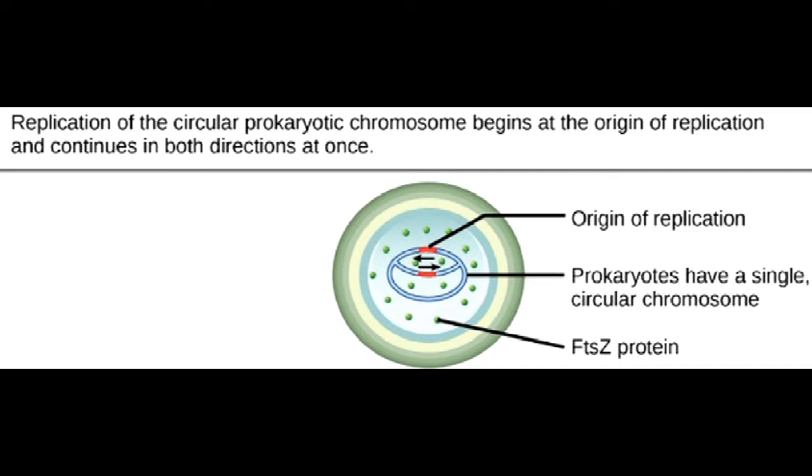The bacterial chromosome is attached to the plasma membrane at about the midpoint of the cell. The starting point of replication, the origin, is close to the binding site of the chromosome at the plasma membrane.